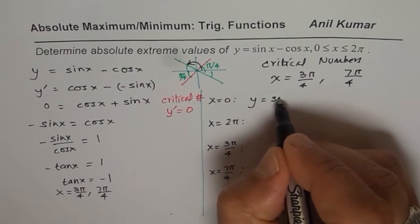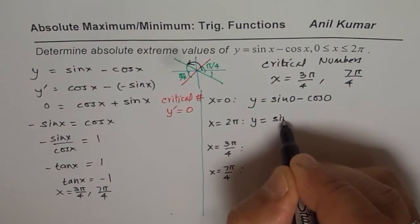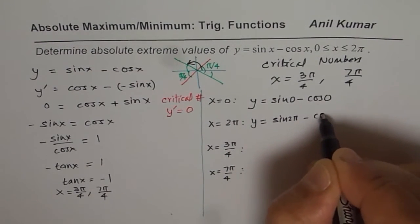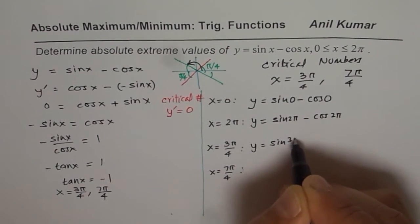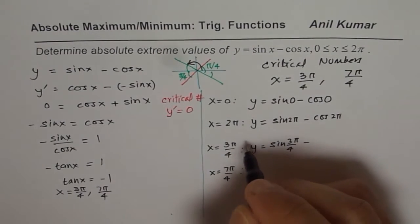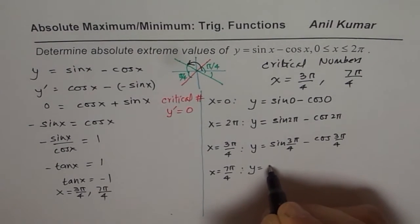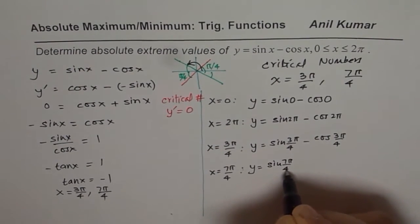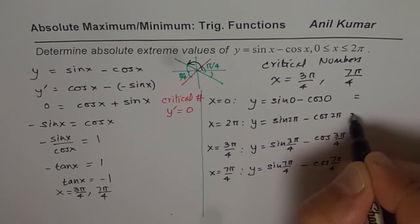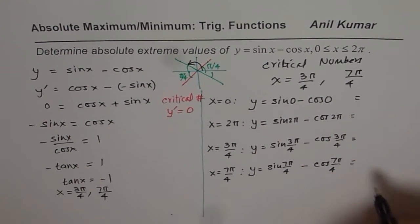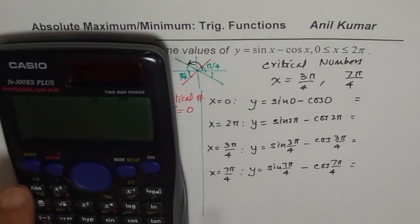So y equals sin 0 minus cos 0; y equals sin 2 pi minus cos 2 pi; y equals sin(3 pi by 4) minus cos(3 pi by 4); and y equals sin(7 pi by 4) minus cos(7 pi by 4). We can use a calculator to evaluate these values.